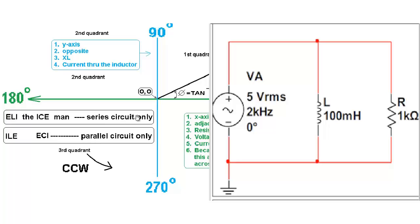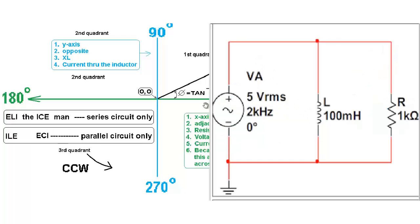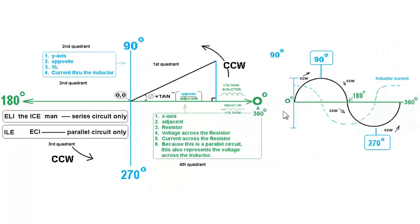To get the mnemonic right for a parallel circuit, you simply reverse the I and the E. So instead of ELI the ICE man for a series circuit, we have ILE and ECI for a parallel circuit. This says the current leads the voltage in an inductor. The black represents both the voltage across the resistor and the voltage across the inductor, because they're in phase — and they're in phase because they're in parallel.